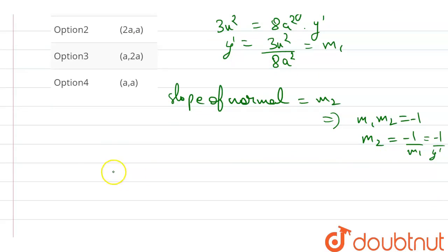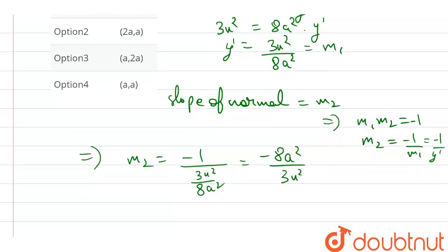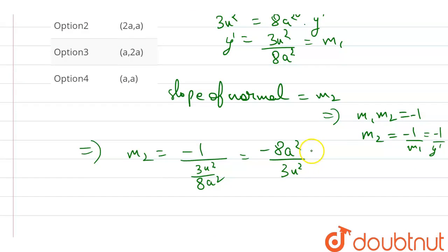Now, putting this, m₂ is -1 upon 3x²/8a². So this becomes -8a²/3x². And as in the question, the given slope is -2/3. So I am equating with this. Now solving this...